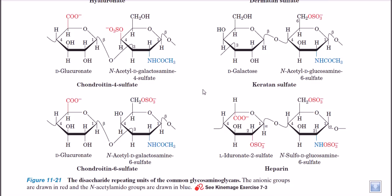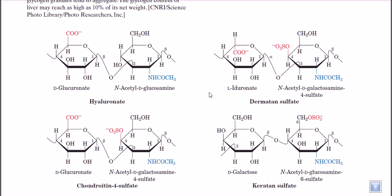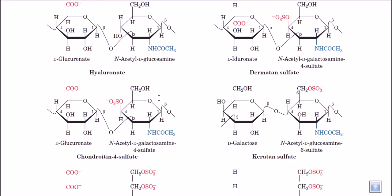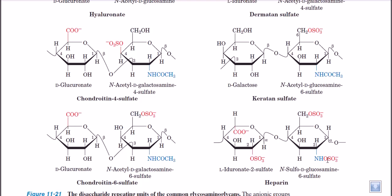How the extracellular matrix is formed is covered in a separate lecture. This is all about glycosaminoglycans and modified sugars: in all these cases the second carbon position is substituted with an amine group — the NH-CO-CH3 group — except for heparin, where instead of NH-CO-CH3 we have the NH-O-SO3 group.